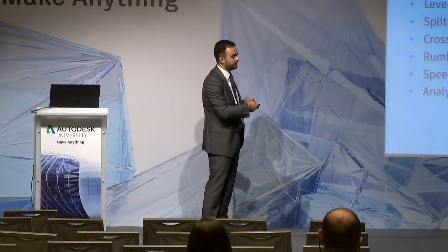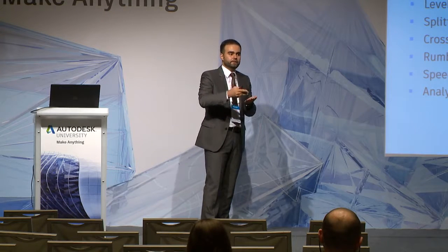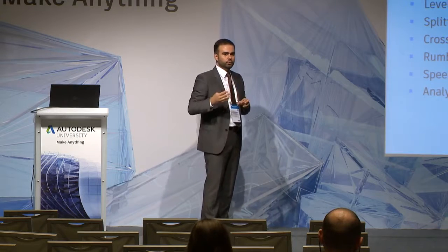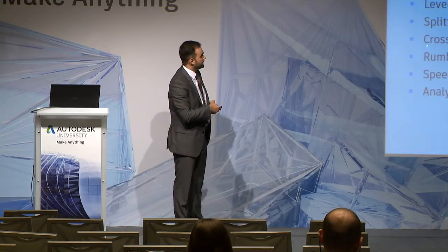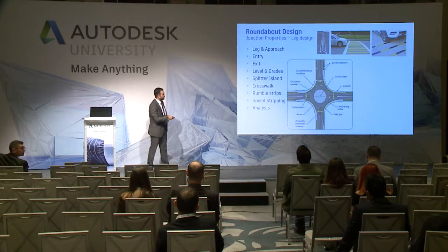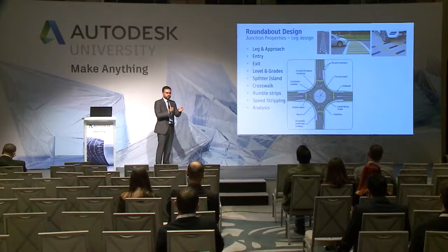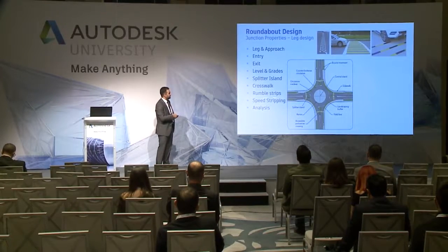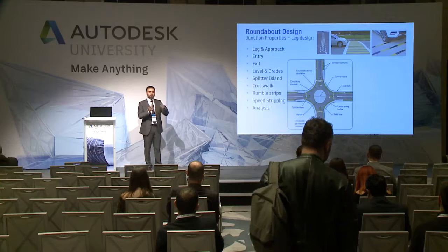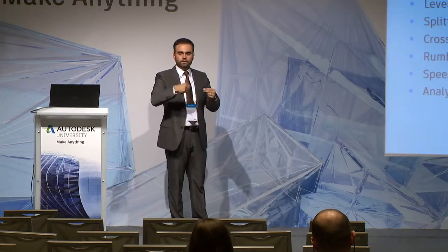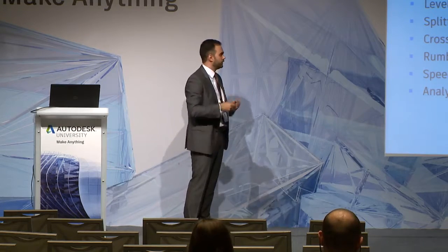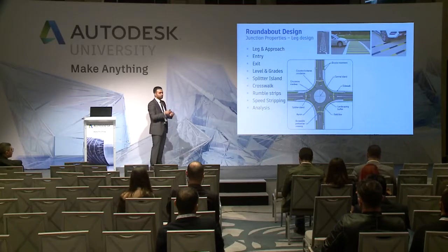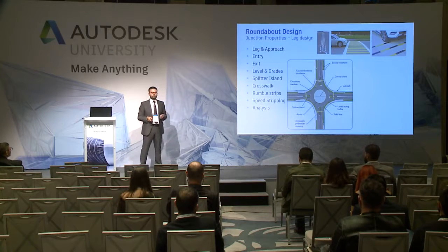All of these maintain a certain design speed for entering and exiting the roundabout, and are already incorporated in the tool. It also helps you design the splitter islands — all the islands you see at the legs that split the opposite sides of the roadway — as well as rumble strips and speed striping. If you have anything related to road marking or signage, it has a powerful capability to place those sign boards in 3D and mark the road all the way on all legs and approaches. It can also do analysis on the roundabout in terms of visibility, speed, and clashes.